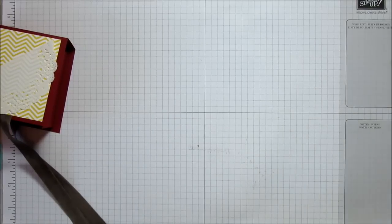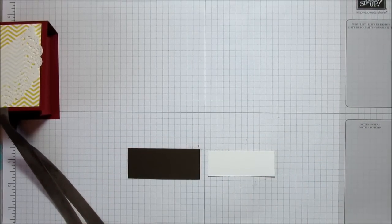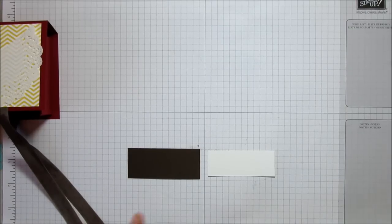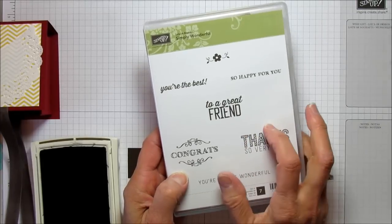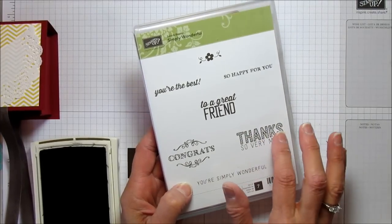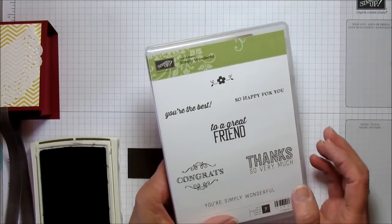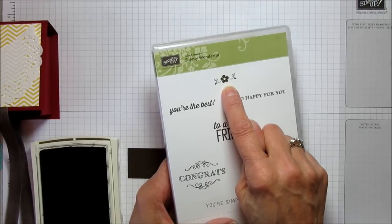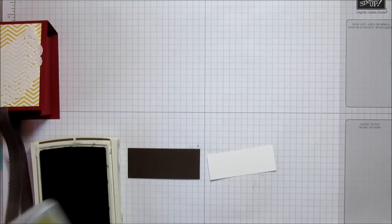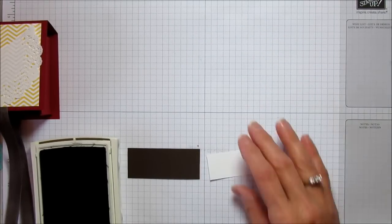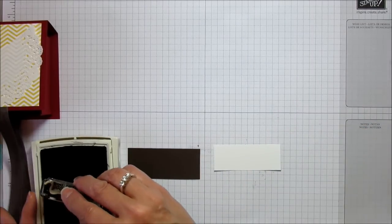We're going to attach that there. Let's stamp the sentiment because I want to make sure before I put the flower on that the sentiment is centered right. I'm going to use early espresso ink. The stamp set I'm using is one of the free stamp sets from our celebration - if you spend $50 you can get this one free. It's called Simply Wonderful. If you saw my card tutorial that I made for my friend, I used this little flower for that. It's a great little freebie if you want to get that before celebration ends on March 31st.